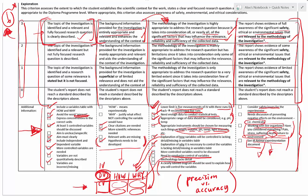Any chemicals or anything you're exposing live animals to should be something they would normally be exposed to in their environment. For example, if you're using water fleas or wood lice, you wouldn't test what nicotine does to them because wood lice don't normally encounter cigarettes. There is a whole document provided by the IB — the IB animal experimentation document — which you can find online. We're going to stop here and pick up with analysis in the next video.